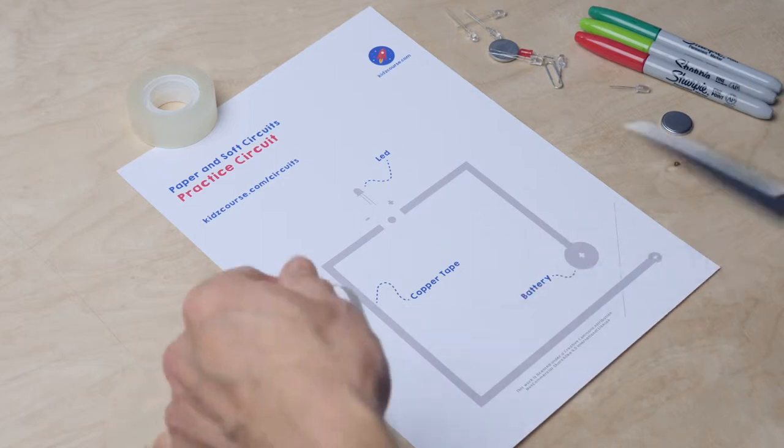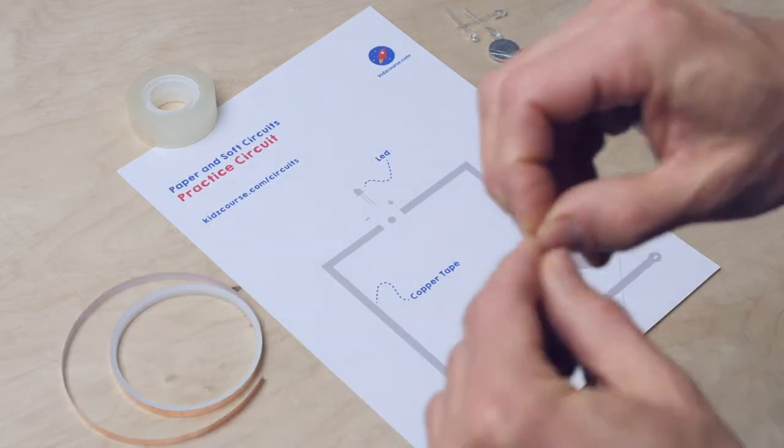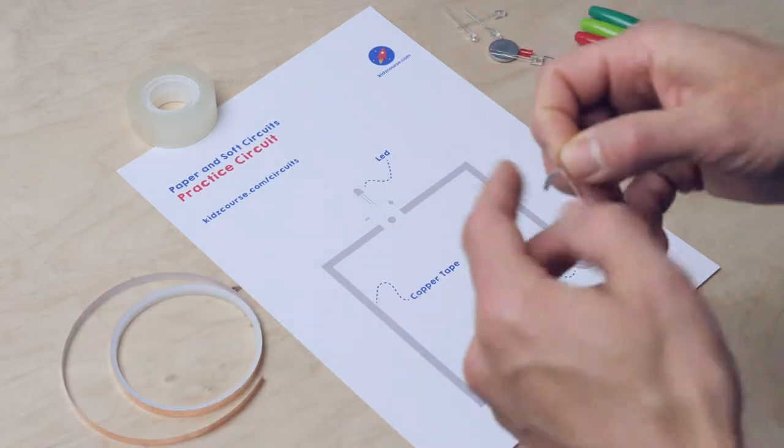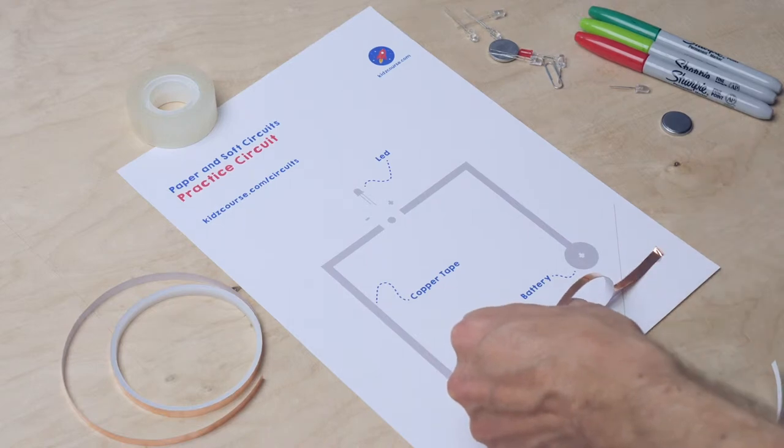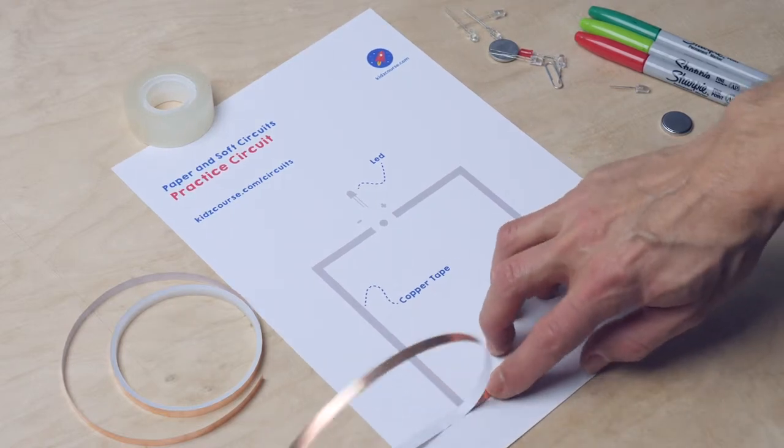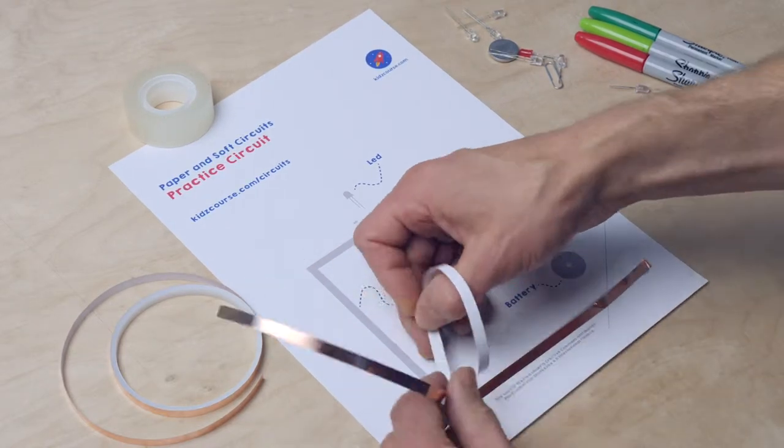Before we're going to make the monsters, we're going to practice first. Jay is going to show you first and then you may try it yourself. First, use the copper tape and stick it on. Try and do that in one piece. To fold a corner, you first fold it into the opposite direction, then to the correct direction.